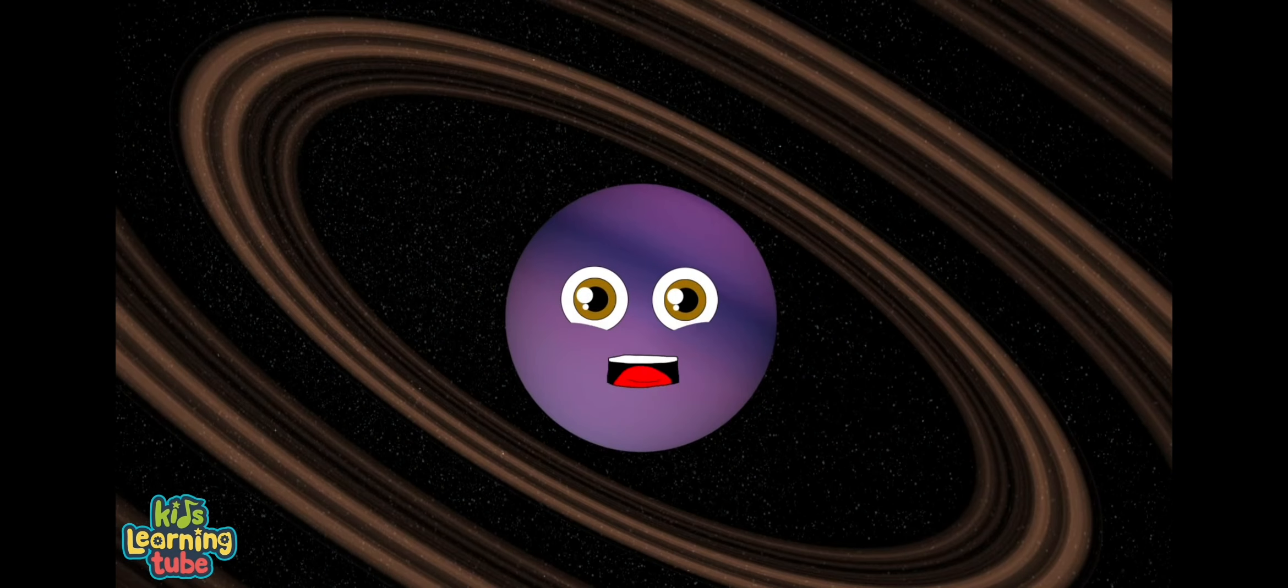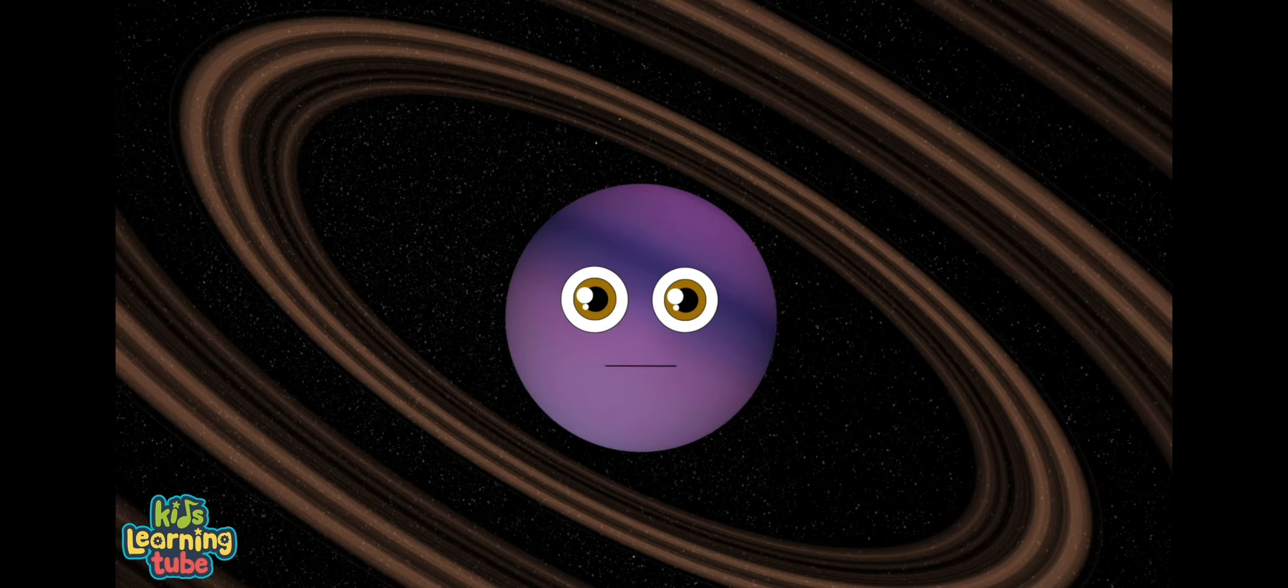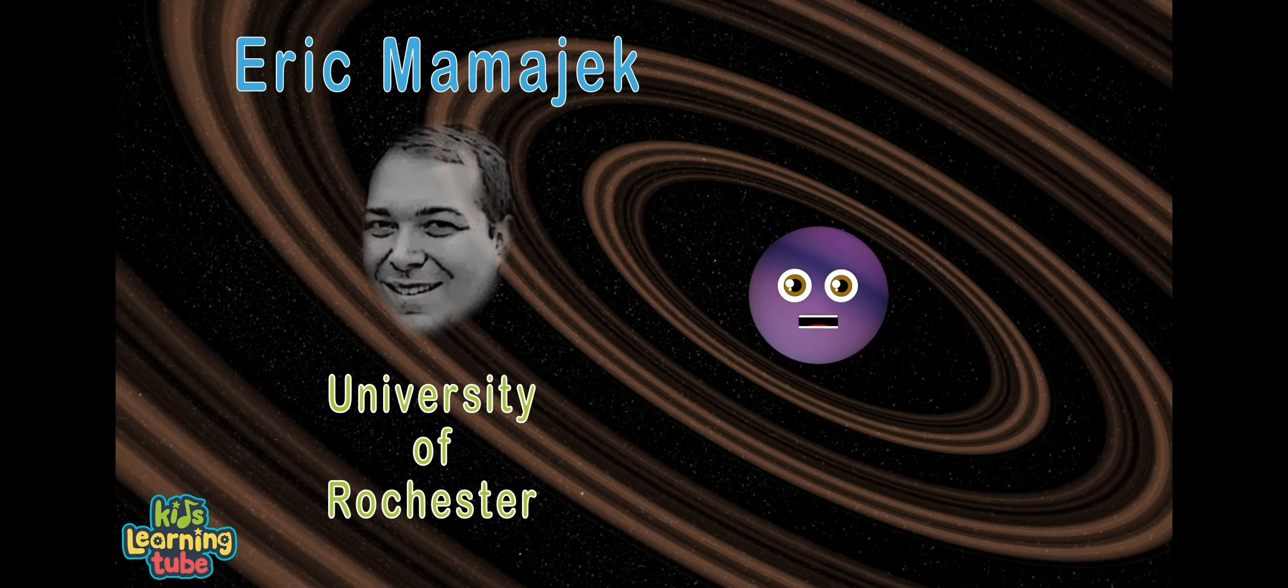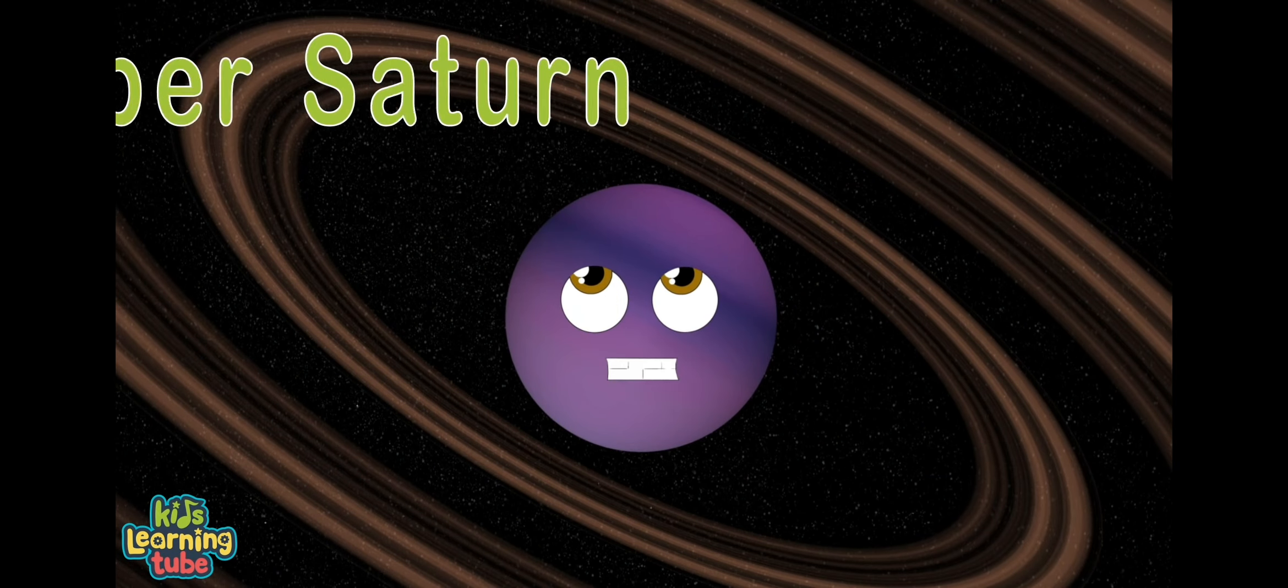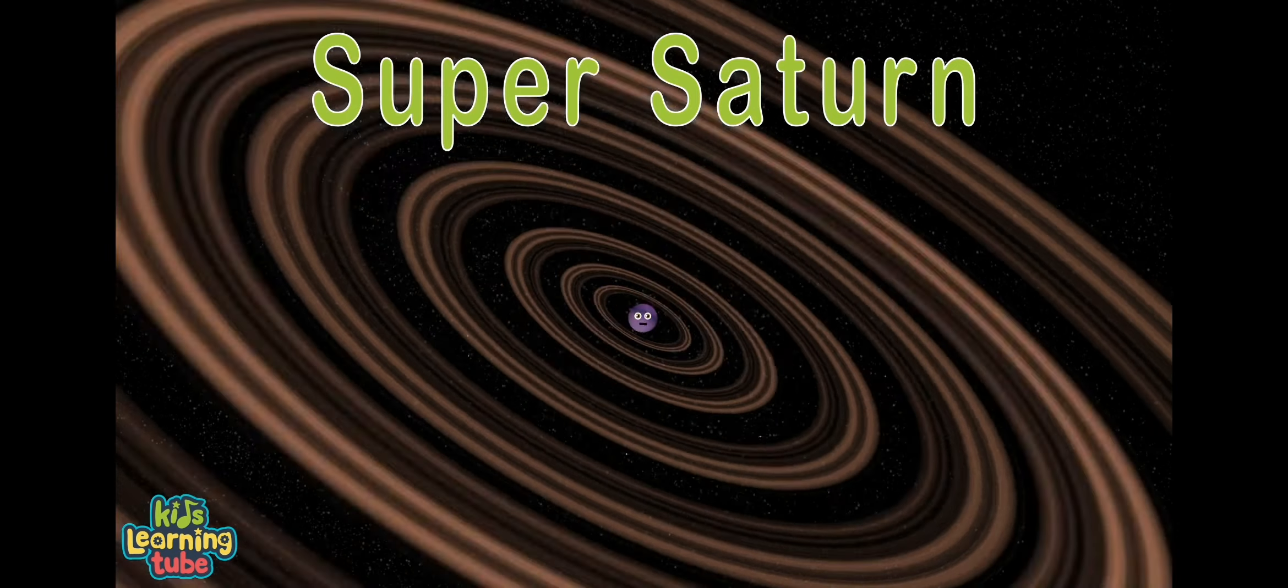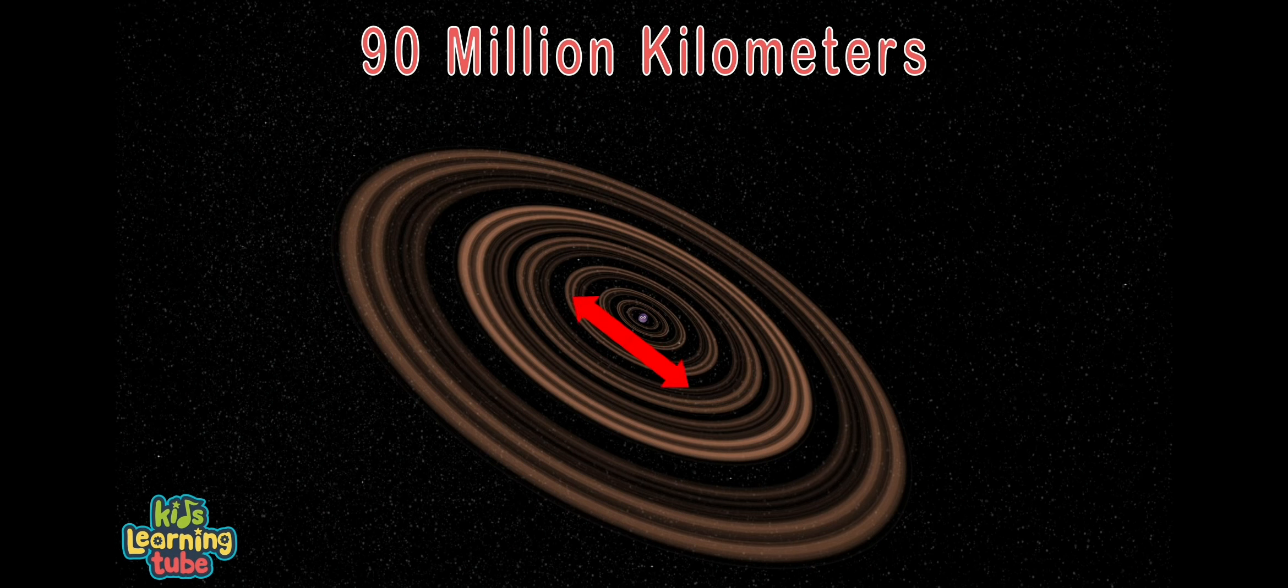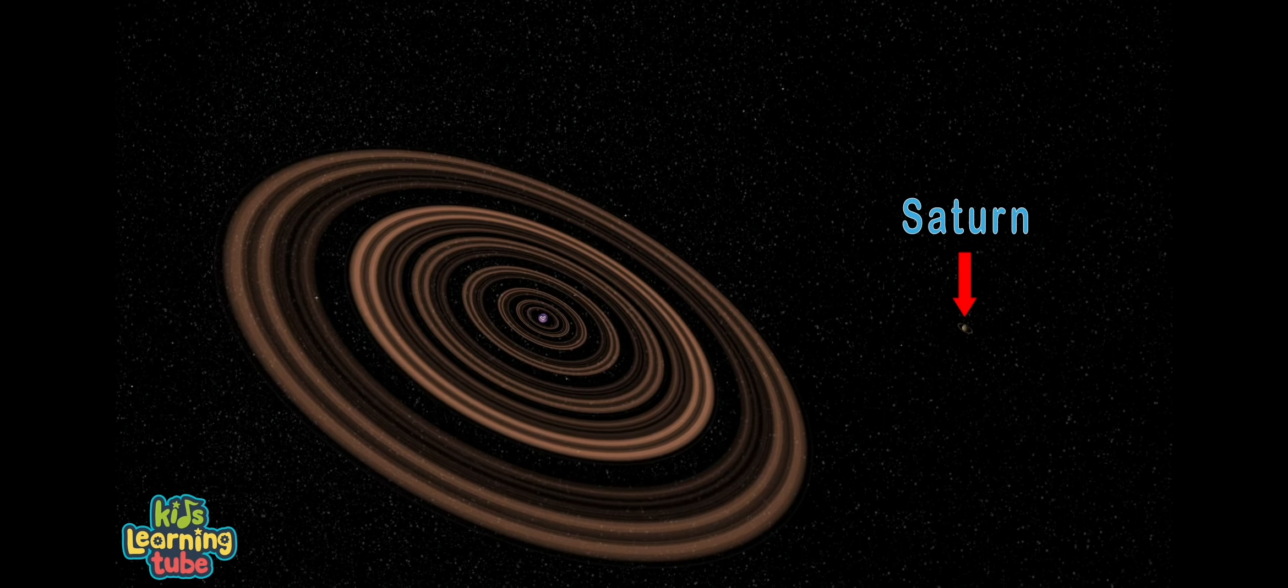Centauri. In 2012, when I was discovered by Eric Mamajek at the University of Rochester, I earned the name of Super Saturn because of my massive system of circumplanetary rings for sure. 90 million kilometers is the radius of my rings. That's about 200 times the size of Saturn's rings, which makes me the king.